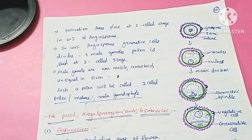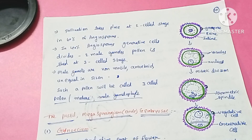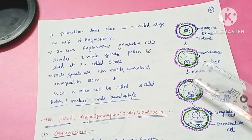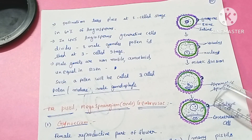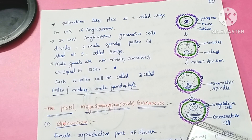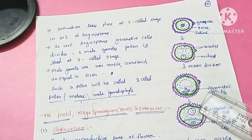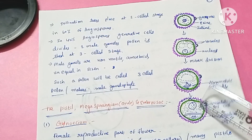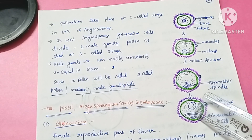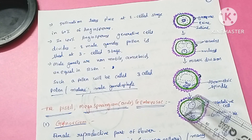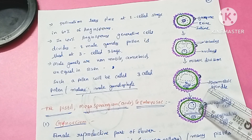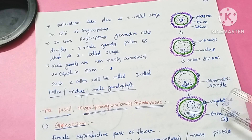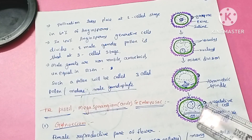In the development of the male gametophyte, the pollen grain divides by mitosis into two cells. The vegetative cell is bigger in size, has an irregularly shaped nucleus, and has a high amount of food reserves. The generative cell is smaller, spindle-shaped, and has dense cytoplasm.